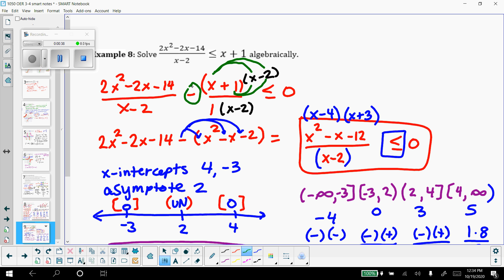So that gives me my original problem, 2x squared minus 2x minus 14. Subtract the x squared, subtract a negative x, so add x, and then subtract a negative 2, so add 2. That turns this whole numerator into x squared minus x minus 12 all over x minus 2.